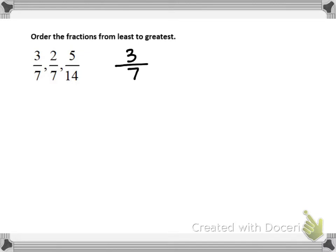Let's start with the fraction 3/7. In order to obtain a denominator of 14, we will multiply the numerator and the denominator by 2. This creates an equivalent fraction of 6/14. So the fraction 3/7 is equivalent to 6/14.